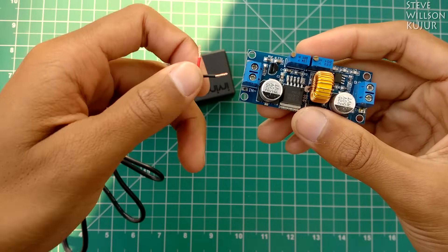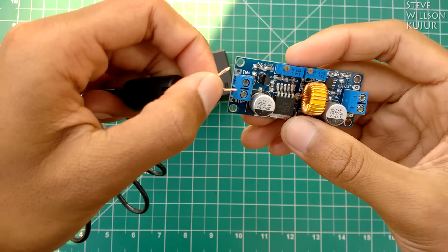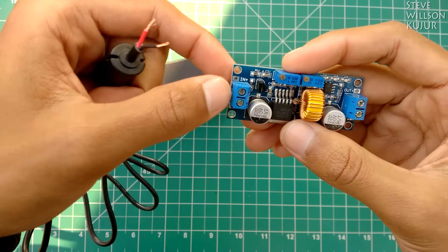Now connect these black and red wires to the input of the module. Black one goes to negative and red one goes to positive.